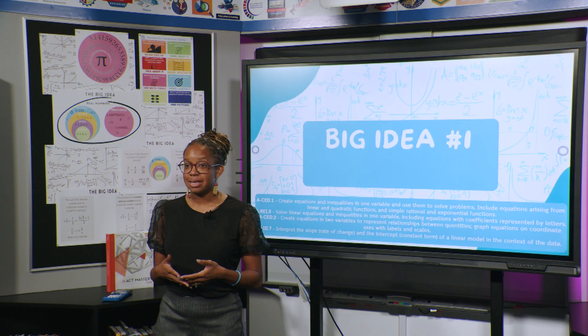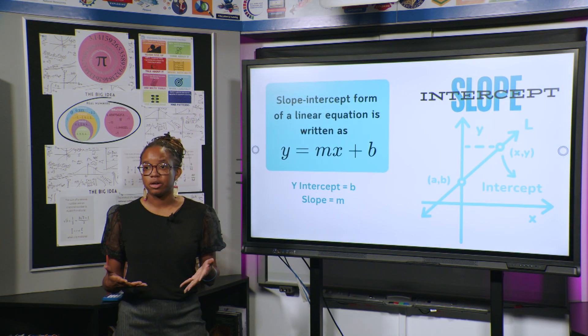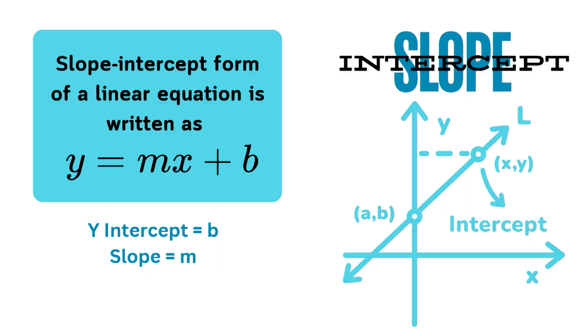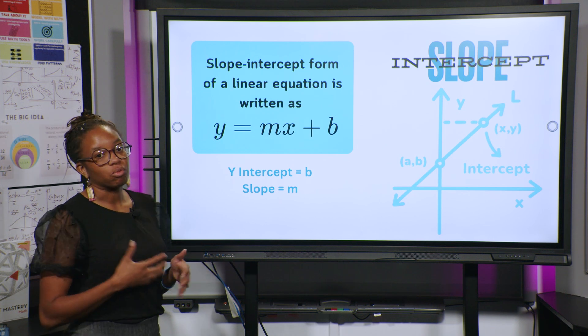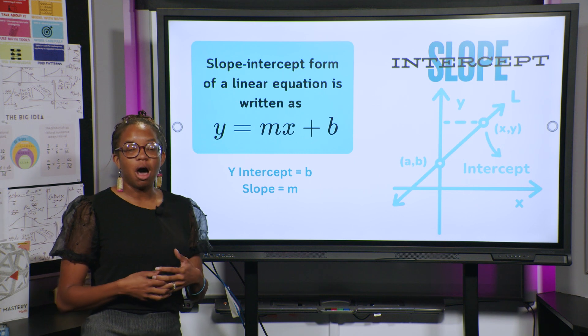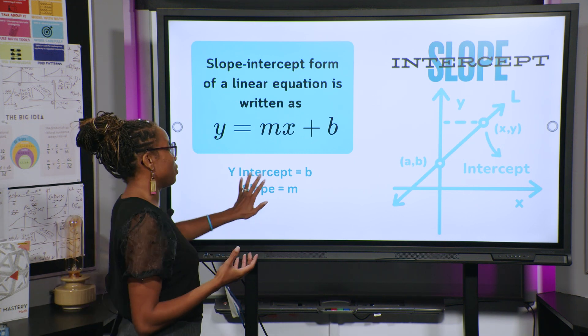Big idea number one. So that is, let's go over what is slope-intercept. Slope-intercept form of a linear equation is written as y equals mx plus b. Your y-intercept is going to be your b, and your slope is going to be m. So let's see what does that mean in the context of writing in slope-intercept form, going from a graph to slope-intercept form, and then also, when given two points, finding that equation for a slope-intercept.